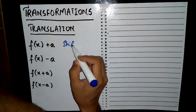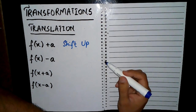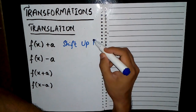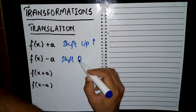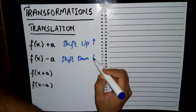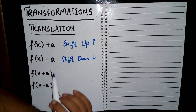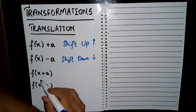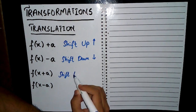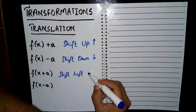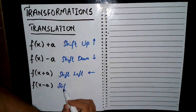f(x) + a means we have to shift the graph a units upward, and f(x) − a means a units downward. In the case of f(x + a), we will shift left, and f(x − a) means we have to shift to the right side. I will give you some examples for these.